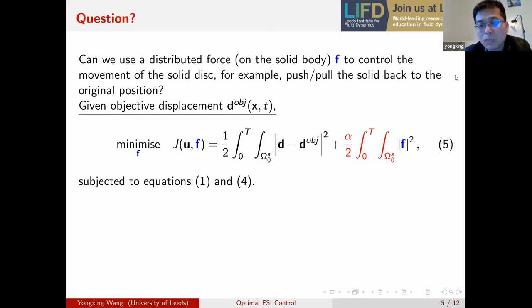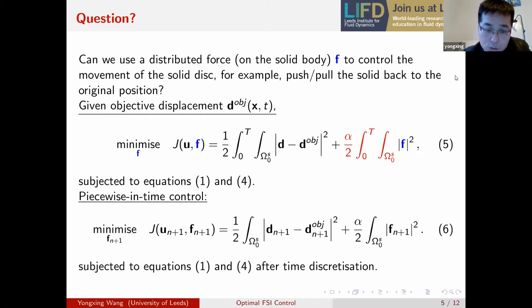So this means the smaller the regularization parameter alpha is, the more we can reduce our real objective, which is the first term. But a too small alpha may cause instability issues, because we lose control of our controlling force F. You may also notice that our objective function involves integration in both space and time, which is actually complicated. And a simplified version is the so-called piecewise-in-time control. In which case, we minimize the objective in every single time step, as described in equation six. You might say these two problems are not equivalent with each other. Right. They are not equivalent.